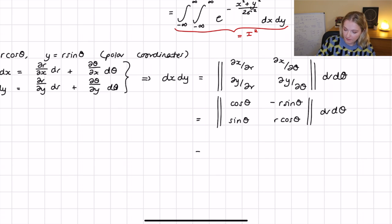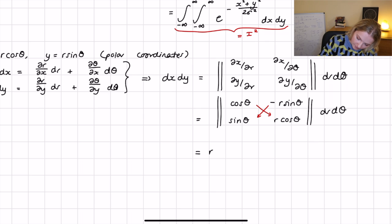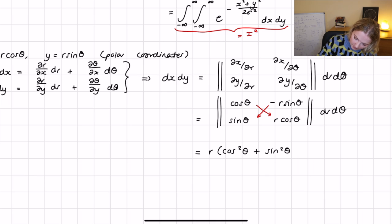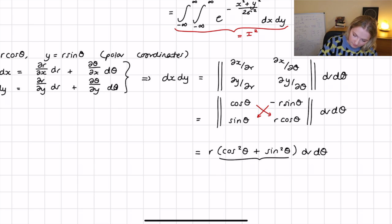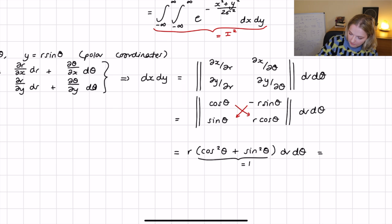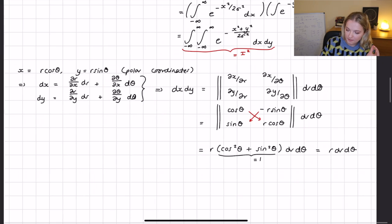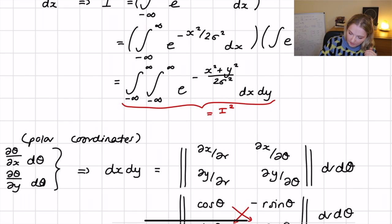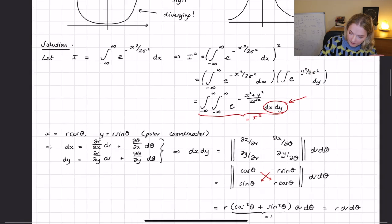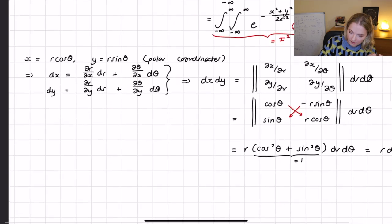All that's left is to fill in the known values: partial dx by dr gives cos theta, dx by d theta gives minus r sine theta, dy by dr gives sine theta, and dy by d theta gives r cos theta. Taking the determinant — this times this minus this times this — we get r times cosine squared plus sine squared, which by the trigonometric identity equals one. So we end up with r dr d theta.